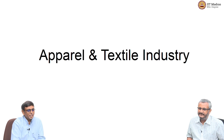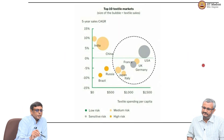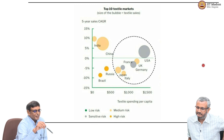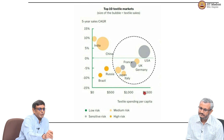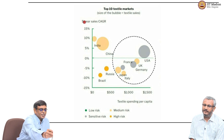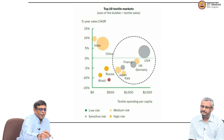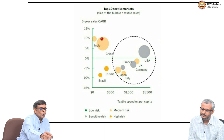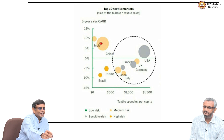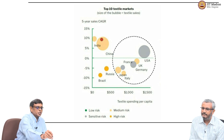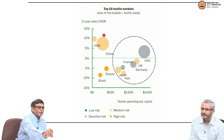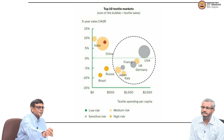Moving to apparel and textile, page industries. Here I tried to put it again in the per consumption framework, so on this axis you have textile spending per capita and here the CAGR. Countries with low per capita spending should have a higher growth rate, so you should see a line going like this. India is in the 0 to 500 dollar per capita spending range and is showing around 10 percent CAGR.